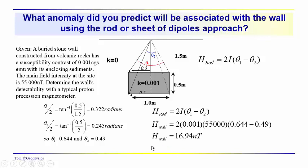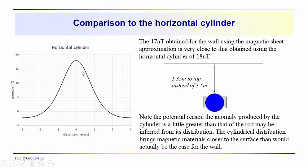So 1 nanotesla less. Let's take a look at the horizontal cylinder, the anomaly we got as a function of x to either side of a point directly over the center of the cylinder. These x values are measured relative to the point of symmetry. It turned out to be 18 nanoteslas, and we've just pointed out that's 1 nanotesla larger than what we got assuming the wall could be represented by this magnetic sheet.